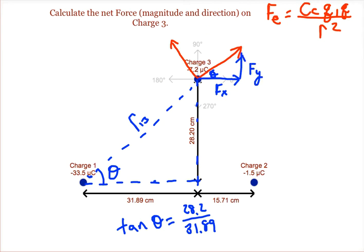Okay, we then switch over to charge 2 and 3. Again, we know it's going to be a repulsive force. We need to find the distance and the angle. We do it the same way we did before. We get the hypotenuse of this green triangle.